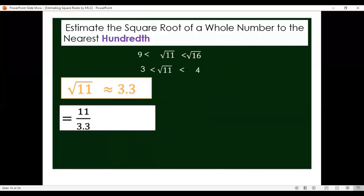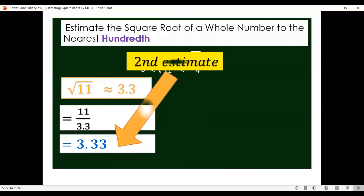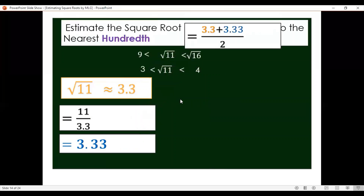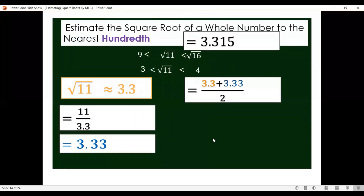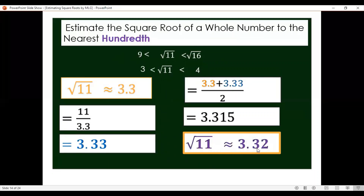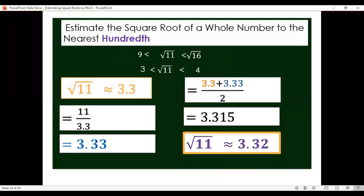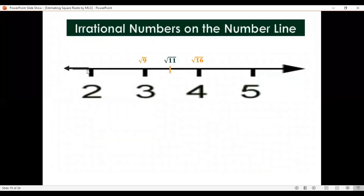Divide 11 by 3.3 to get the second estimated value. Then get the average of the first and second estimated values for the final answer, rounded to the nearest hundredth. Square root of 11 is approximately equal to 3.32. So square root of 11 is closer to 3 than to 4, since 3.32 is less than 3.5.